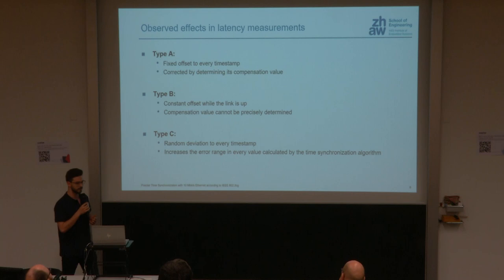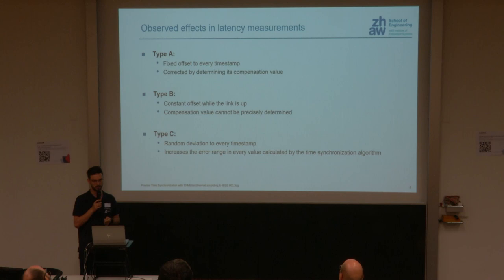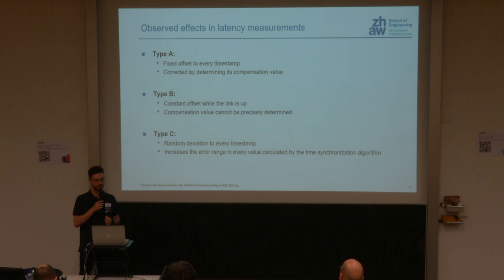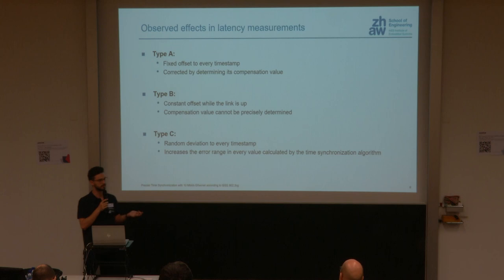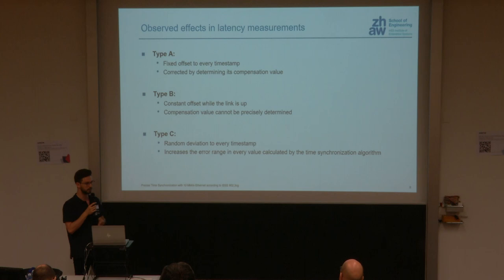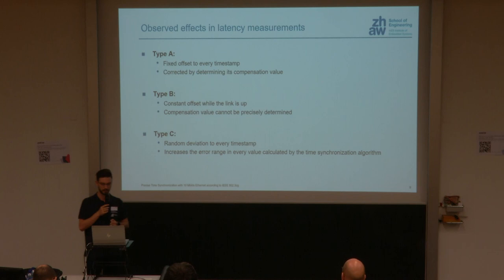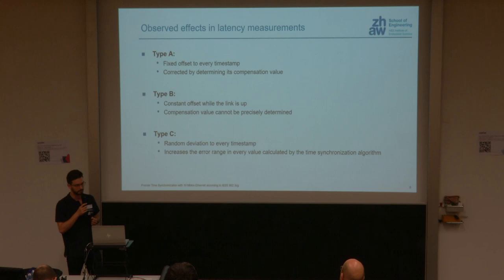Among the many effects we observed, we categorized them into three main types. Type A errors add a fixed offset to each timestamp that remains constant for as long as the system is running — you can measure it once and configure the protocol to compensate. Type B errors also add a constant offset while the link is up, but this offset may change when the link is reestablished or the device is reset, making compensation harder. Type C errors add a random deviation to every timestamp, which increases the overall time synchronization error.